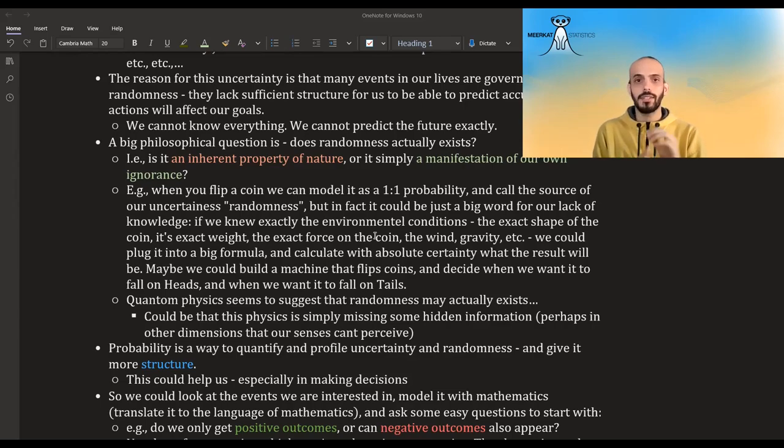the exact force exerted on the coin, the environmental conditions, the gravity, the wind, etc., we could take all this information, we could calculate all of this in, and maybe we can predict accurately or almost accurately the result of the coin. And then we won't say that this is random. We could actually maybe even, if the way that we exert a force on the coin, it can change. Maybe we build a machine that does it exactly the same. And so we can even decide that when we flip the coin this time, it will be heads. And when we flip the coin another time, it will be tails. So we can take away all the randomness from the coin and make it a complete deterministic event.